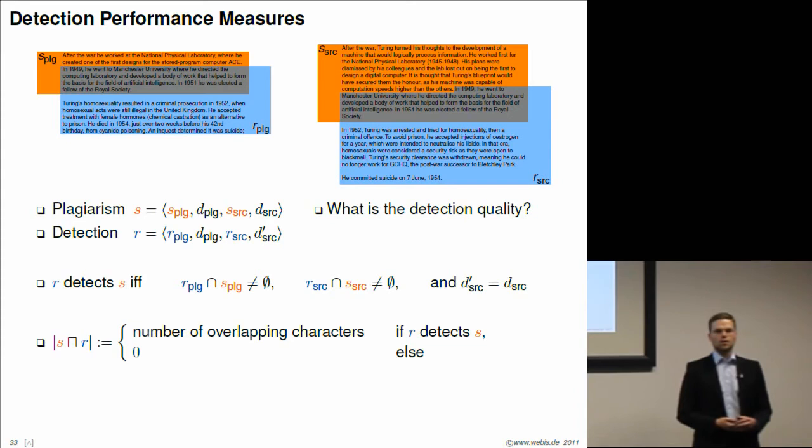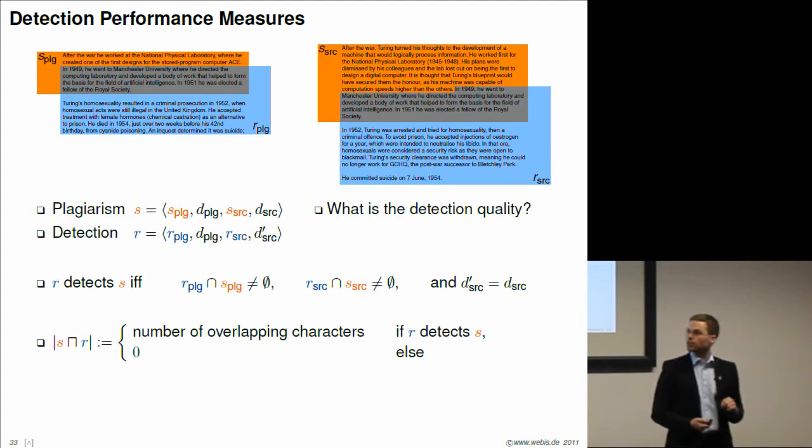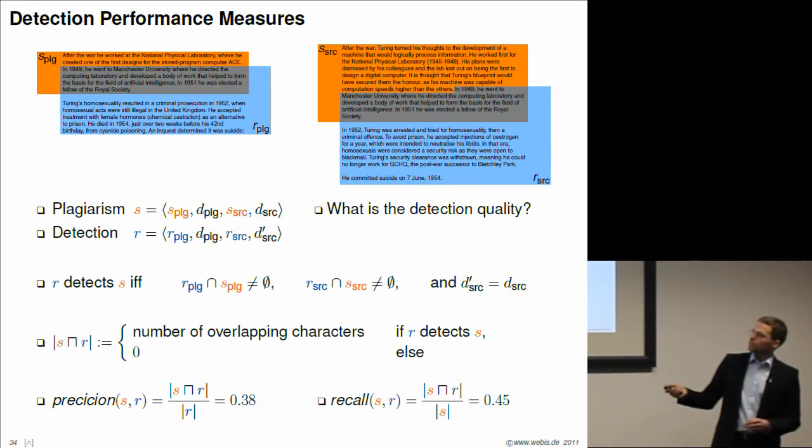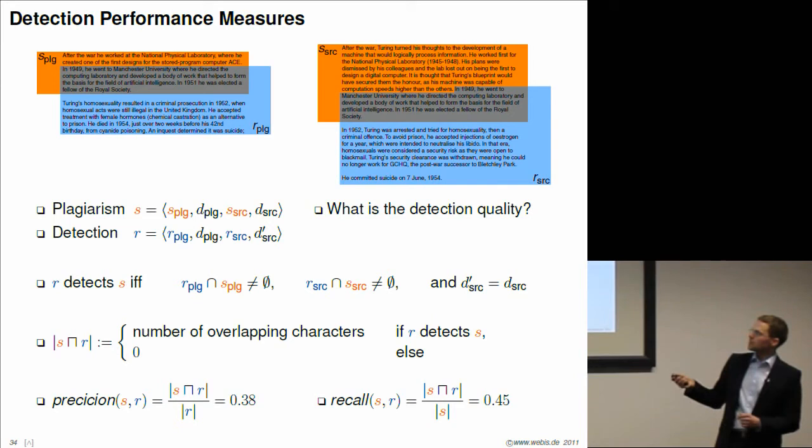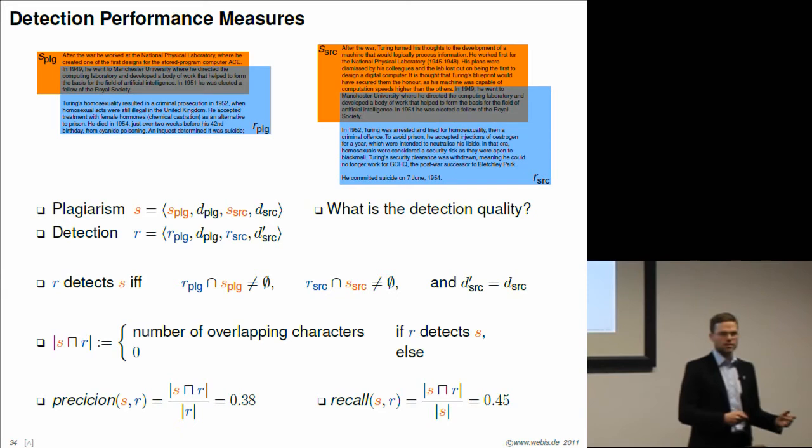We define a certain notation and assign a meaning to it. This is actually taking a shortcut of the actual formalization I took, but it works for this example. We quantify the overlap of S and R as the number of overlapping characters, but only if it is a true detection. Otherwise, it's zero. We can compute two well-known and important quality measures, which are called precision and recall of the detection. Precision simply divides the number of overlapping characters by the length of the detection. Precision computes if everything what has been detected should have been detected. Recall divides the number of overlapping characters by the total length of the detection on both sides. Recall computes if everything that should have been detected has been detected.